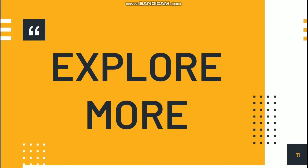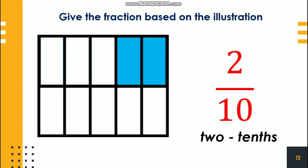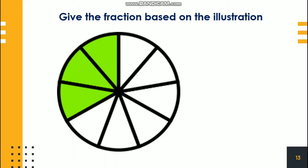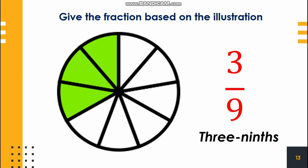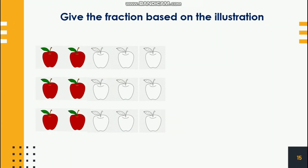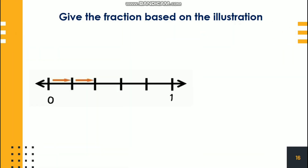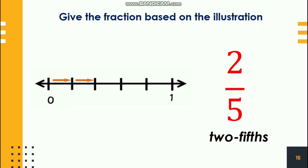Let us explore more by answering the following items. Give the fraction based on the illustration. It's two-tenths. Next, the fraction of this illustration is three-ninths. Next, we have this — this is six-fifteenths. We could also tell it as two-fifths, since we have five groups of apples wherein each group has three apples and two groups were taken. This is a number line, and the fraction of this illustration is two-fifths, since two parts of the number line were taken.